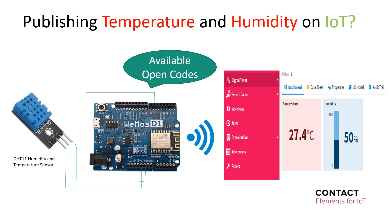Hello everyone. In this video I will describe how to connect the temperature and humidity sensor with a low-cost Arduino WeMOS D1 module, and publish the readings on the IoT platform of contact software. By the end of this video you can watch the real-time status of your building on the dashboard of the contact software IoT platform.